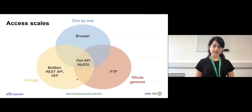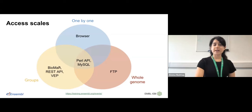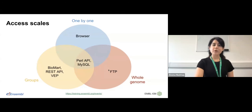There are different ways to access Ensembl data. You can access it one by one through the browser. You also have the option to access data in bulk via Perl API and MySQL, or access custom data tables via BioMart, REST API, and VEP — the Variant Effect Predictor. You also have access to whole genome flat files via our FTP site, which I'll show you when I move on to the demo.